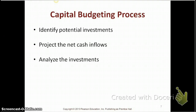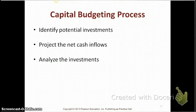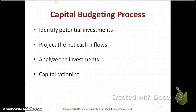For example, let's say we had a lot of potential investments and only three passed the analysis: building an addition to our building, upgrading the computer system, and replacing our existing fleet of vehicles. Now that we've identified these three investments, we come across a problem — we don't have enough money to invest in all three projects. In this situation, companies do what they call capital rationing. Capital rationing is the term used when companies have to choose among alternative capital investments, typically based on availability of funds and how soon managers need a particular investment.